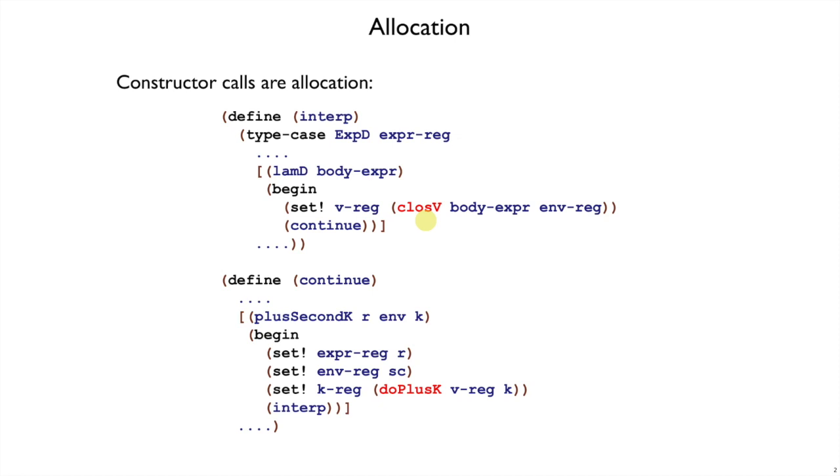So that means we have an interpreter that's full of mallocs but no calls to free. Once we allocate these data structures, where should we free them so that we don't run out of memory?